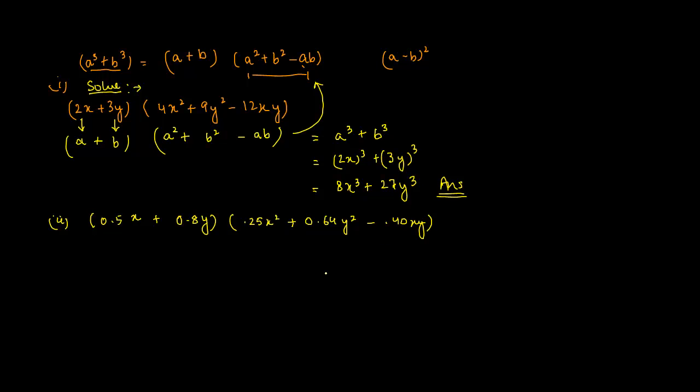Now again let's compare this. Let's say we say that 0.5x is equal to a, and 0.8y is equal to b. Then 0.25x² is basically equal to a², plus 0.64y² is nothing but 0.8², so it becomes b².